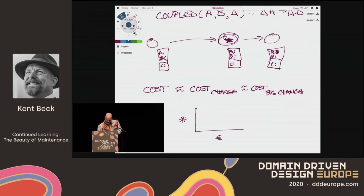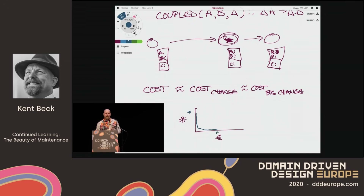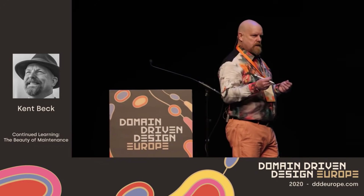If we make a histogram, what it's going to look like is this: we're going to have lots and lots of little changes that are cheap, and we're going to have a few changes that are really expensive. What is the nature of those changes?